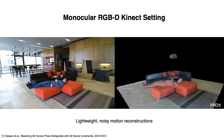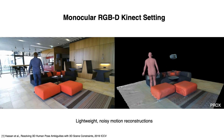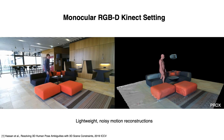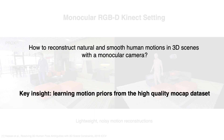To capture large-scale motions in 3D scenes, PROX proposed a markerless pipeline using a monocular RGBD camera, but the reconstructed motion exhibits severe skating and jitters. The question is: with this lightweight monocular camera setting, how to achieve high-quality motions in 3D scenes? To this end, we propose to learn powerful motion priors from a large-scale mocap dataset.